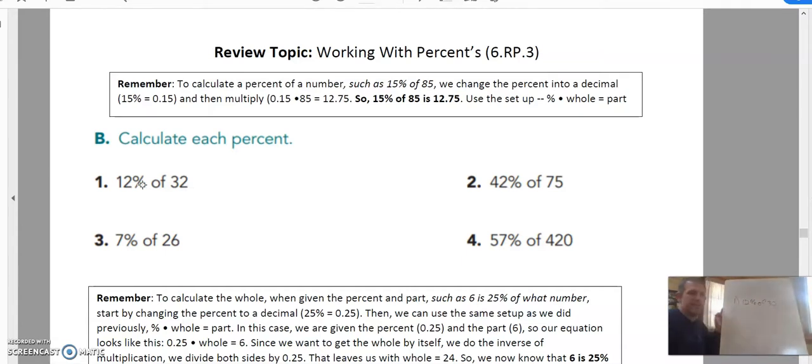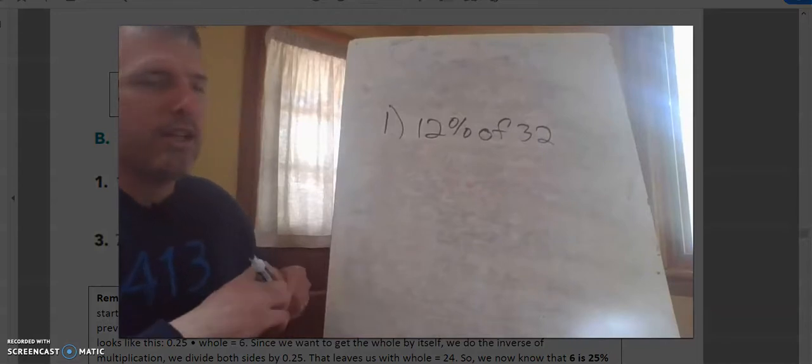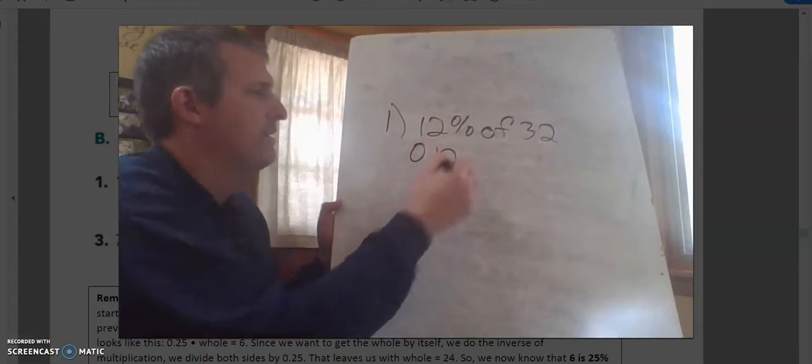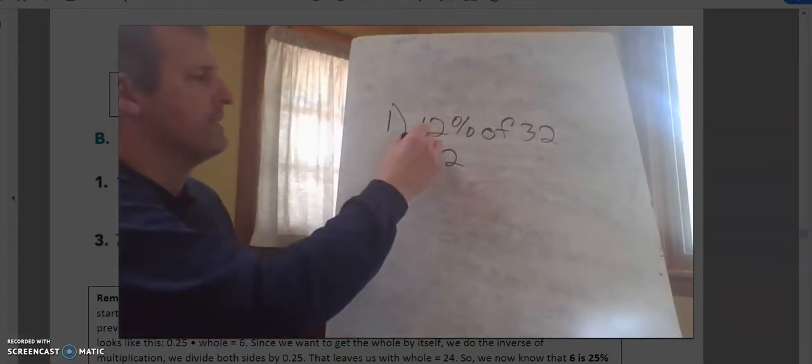Basically what this whole paragraph up here, this box is talking about, is this. I can translate this 12% into a decimal by moving the decimal over two places. 12% is the same as 0.12.